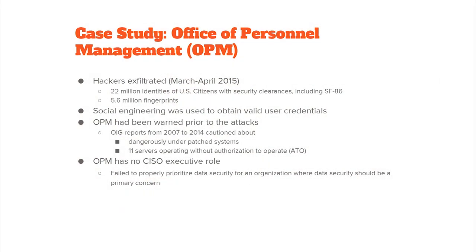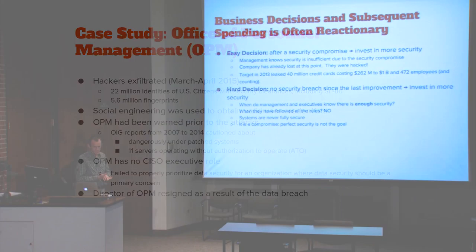OPM had old systems, knew about it, chose not to do anything, and eventually got nailed for it. Interestingly, OPM had no CISO — no Chief Information Security Officer, the C-level person in charge of security. They didn't have one. That goes to the argument that they didn't prioritize data security as high as they ought to have, especially for an organization where data security is one of their primary concerns. The director of OPM ended up resigning as a result of this data breach.